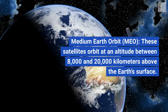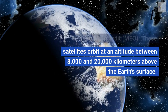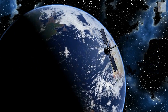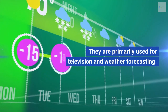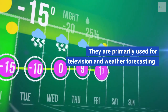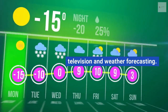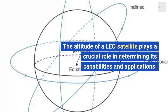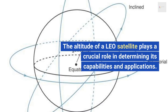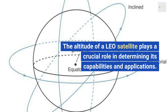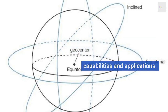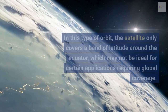Medium earth orbit (MEO) satellites orbit at an altitude between 8,000 and 20,000 kilometers above the earth's surface. They are primarily used for television and weather forecasting. The altitude of a LEO satellite plays a crucial role in determining its capabilities and applications.